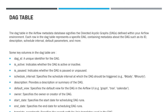The dag table serves as the central repository for storing metadata about the DAGs defined in your Airflow environment. It allows users to manage and configure DAG properties such as schedule interval, ownership, and other settings. The dag table also facilitates the orchestration, monitoring, and management of workflows within Airflow by providing essential information about the DAG structure and properties.